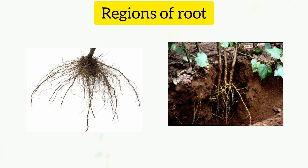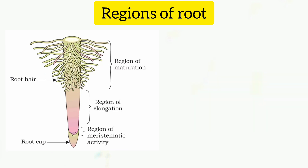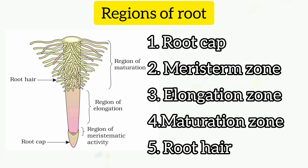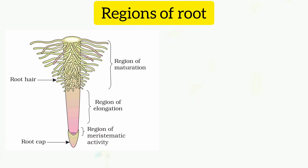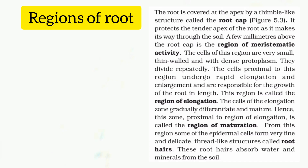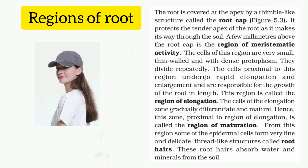The root has several regions. The first region is the root cap. The second part is the meristematic zone. The third part is the elongation zone. The fourth part is the maturation zone. The root cap is located at the very tip of the root.